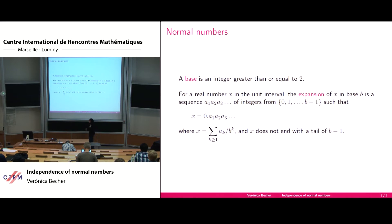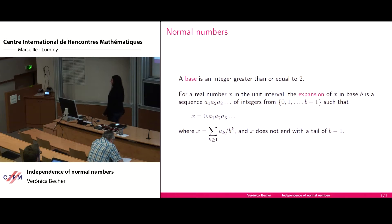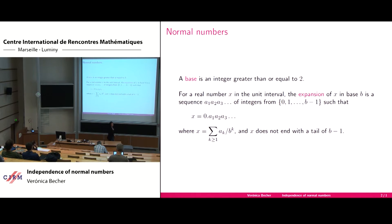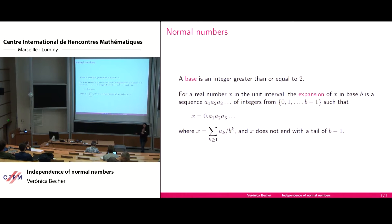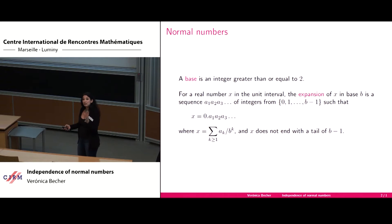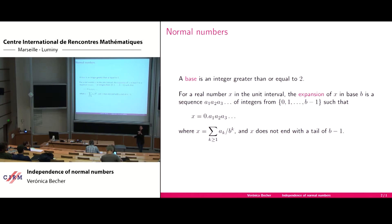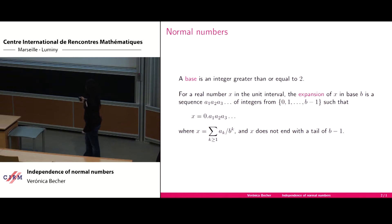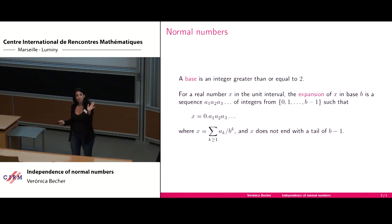Let's be precise with the definition. A base is going to be an integer greater than or equal to 2, and a real number x in the unit interval has an expansion in that base — a sequence of digits a1, a2, a3 — where these digits are between 0 and b-1, such that x equals 0 followed by these digits corresponding to the series of negative powers of the base.